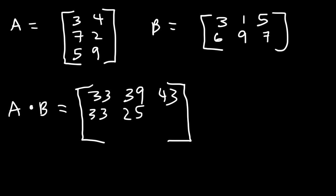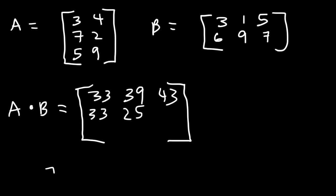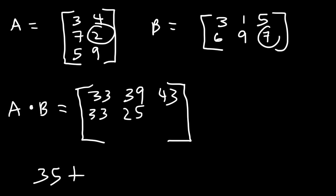Hopefully at this point you're seeing a pattern on how to multiply these matrices — basically you're multiplying the row by the column. So row 2 times column 3: that's 7 times 5 which is 35, and then 2 times 7 which is 14. That adds up to 49.